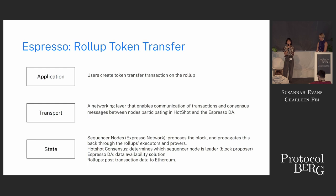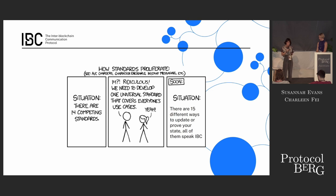Between everyone running light clients of each other or everyone running full nodes of each other, it's obvious which is preferable. If I'm running a full node of everyone else I want to talk to, we might as well just run one big rollup. But a protocol where each chain runs a light client of the others it wants to communicate with starts to sound really familiar — and this is where we get into the pitch part of the presentation.